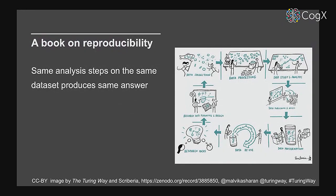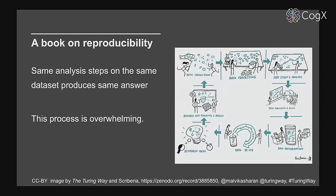Reproducibility in research can be defined simply: the same analysis steps applied to the same data set should produce the same answer. However, it is a very overwhelming process — it requires researchers to make a lot of decisions along the way, from collecting data to focusing on questions like what hypothesis to start with, what's already out there, and who is being impacted by the work, through collecting data without introducing biases, processing and analyzing data with the right tools and statistical approaches, to publishing findings while ensuring sensitivity around clinical data and protecting personal information, and storing with complete data history.